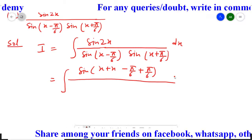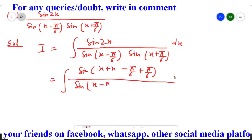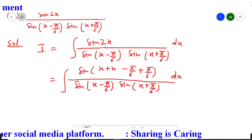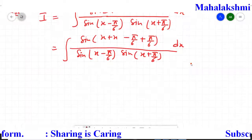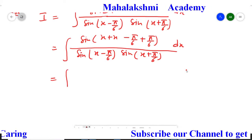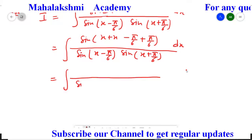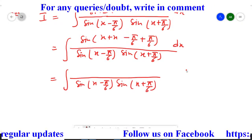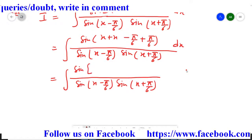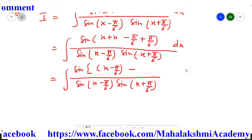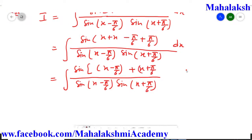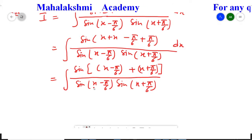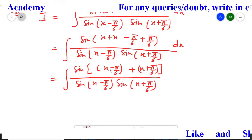Now we have to make pairs in the numerator by keeping the denominator in mind. So the denominator is written as it is: sin(x - π/6) multiplied by sin(x + π/6). In the numerator I make the pair like this — what is in the bracket is (x - π/6) plus (x + π/6). I created these pairs so that they match with the denominator angles. The first angle is x - π/6 and the second angle is x + π/6.